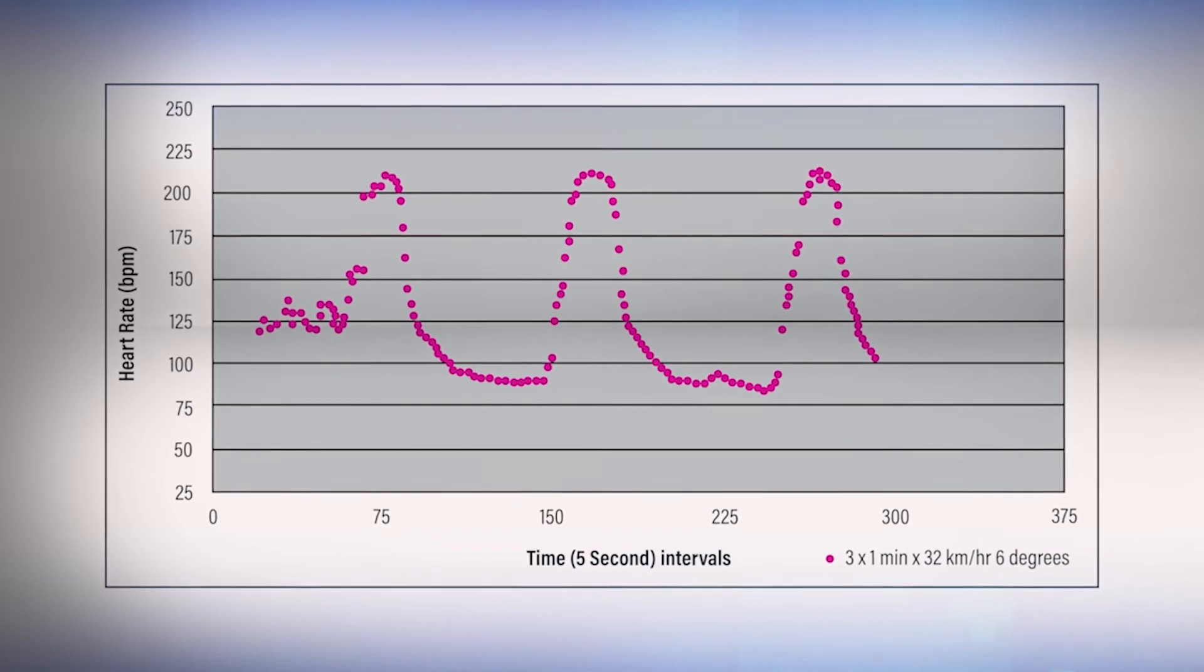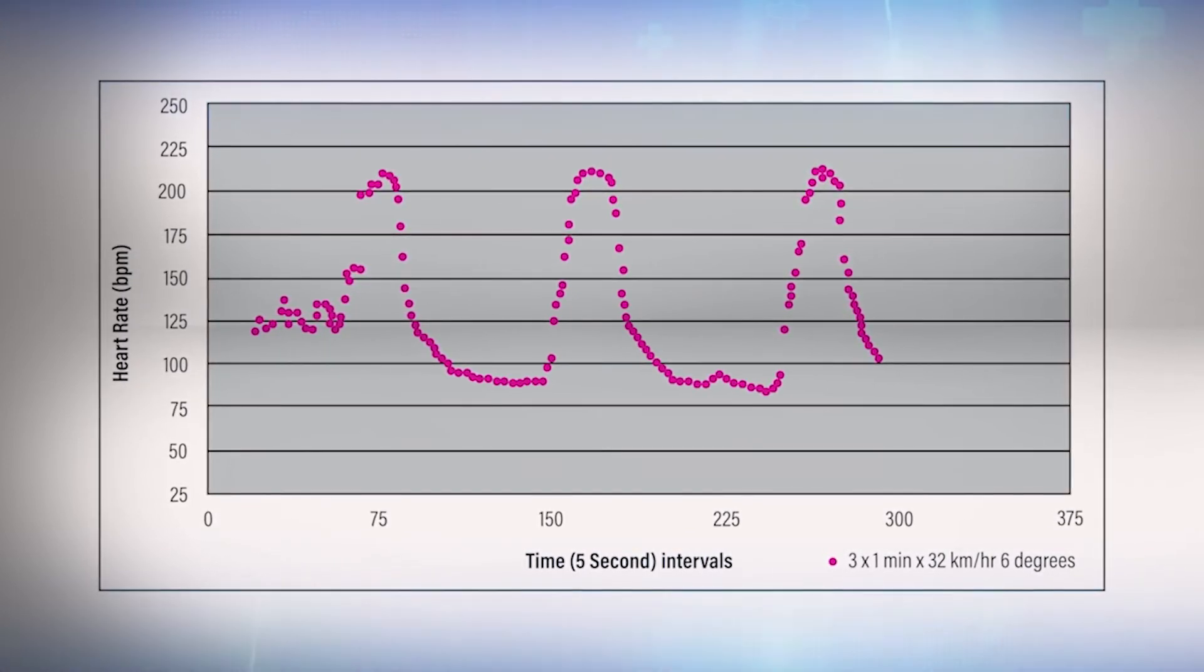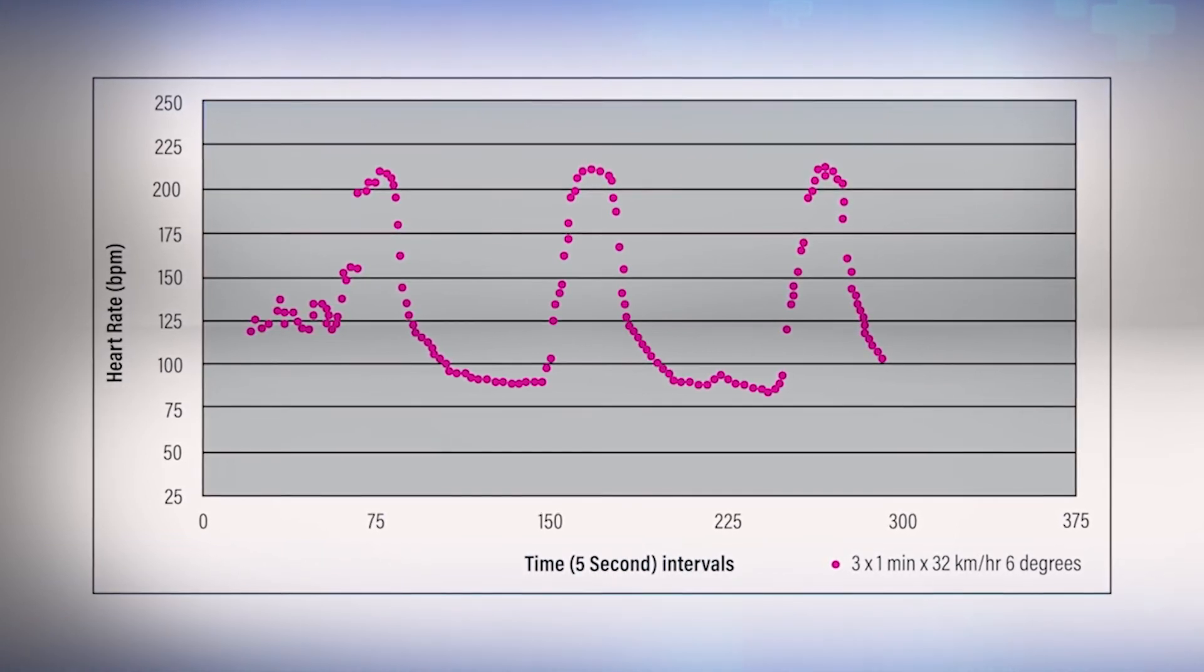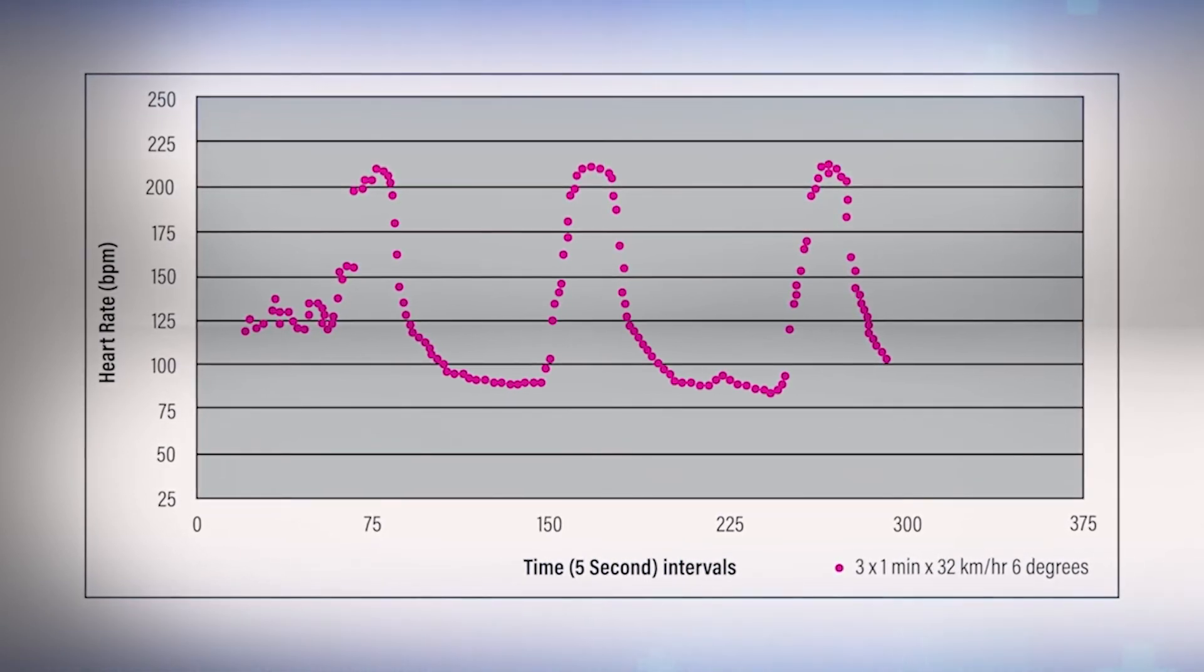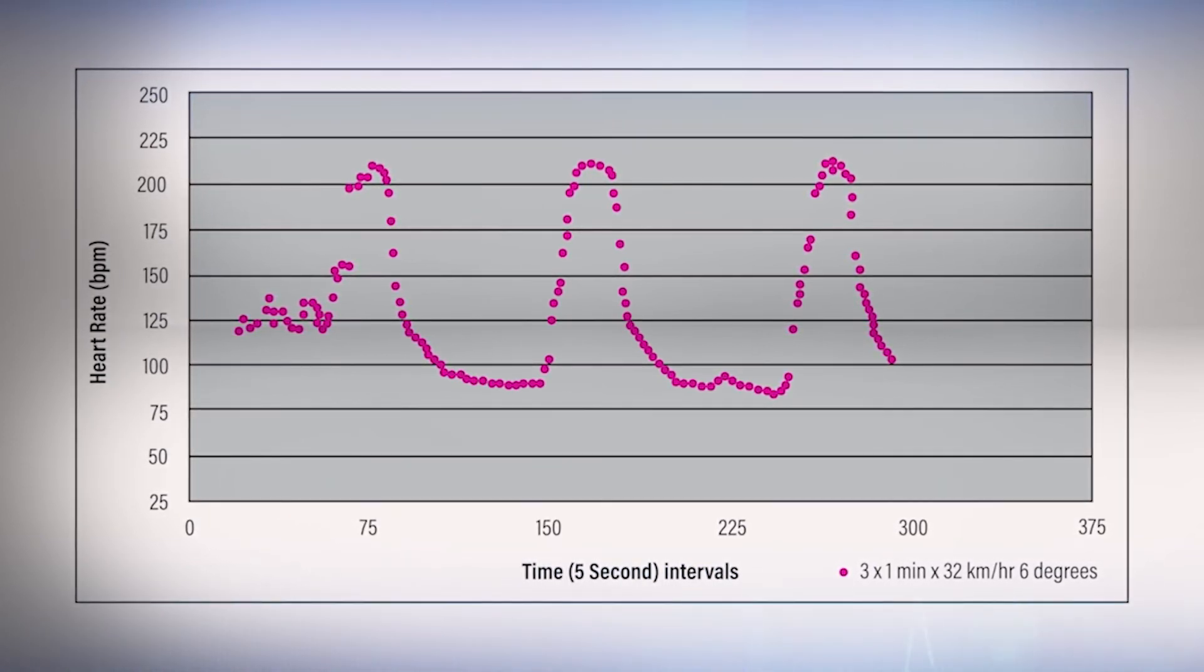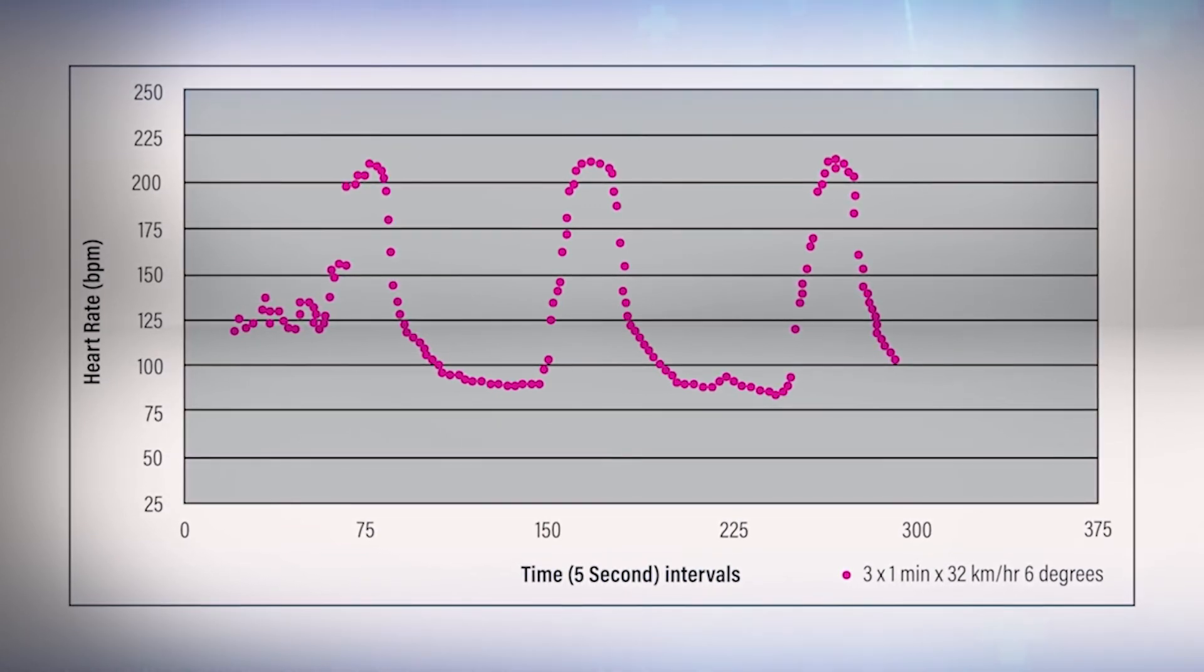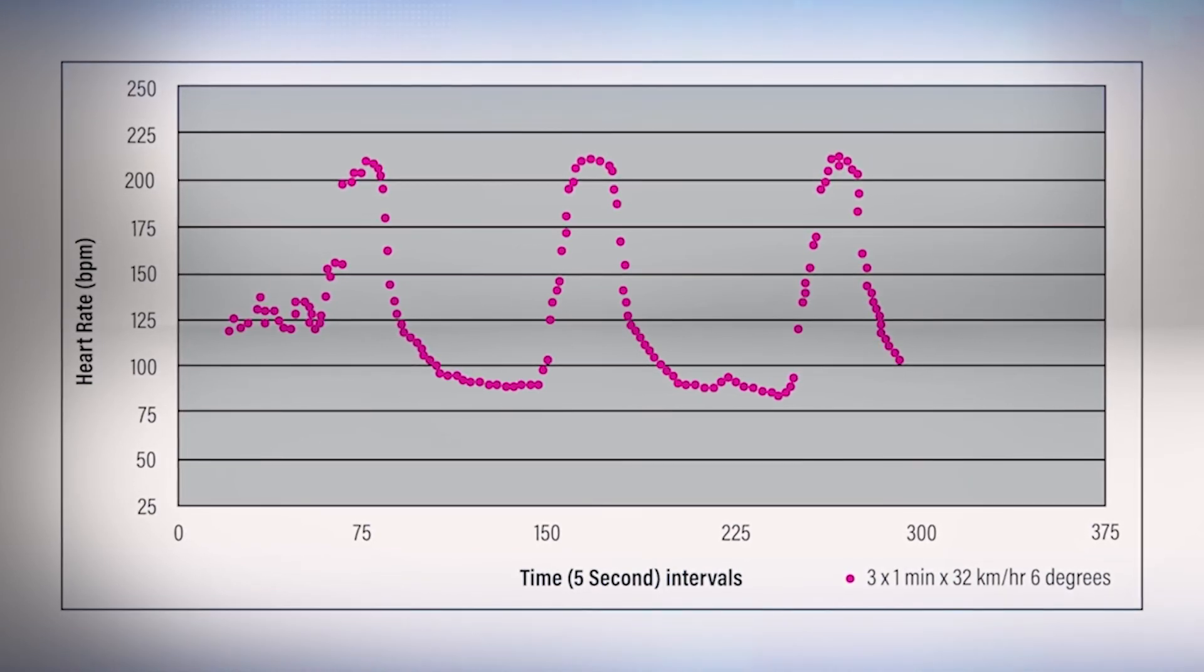If we then look at the next figure, it shows typical heart rate responses of a horse during three one-minute gallops on the treadmill at 32 kilometers an hour at six degrees grade. Again, if you look at this graph, you can see that at the beginning of each exercise bout, the heart rate increases very steeply, and then there's a leveling out over the one-minute gallop. Then each recovery period, the heart rate drops very quickly.